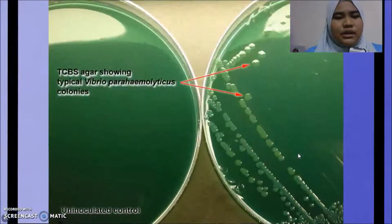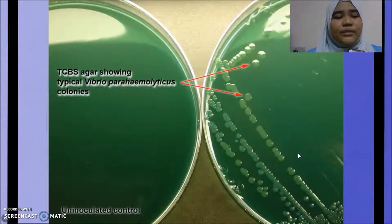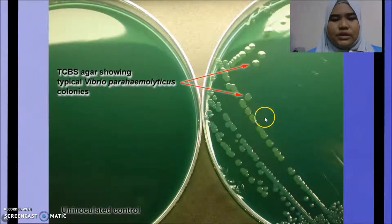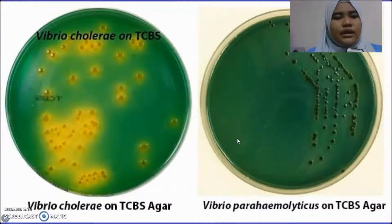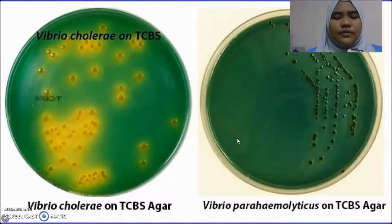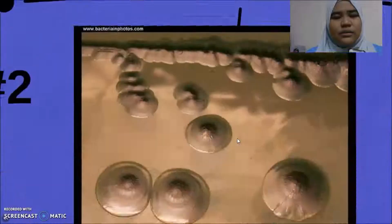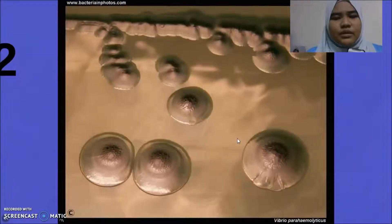These are other examples: the TCBS agar showing typical Vibrio parahaemolyticus colonies — here are the blue-green colonies. And this is the difference between Vibrio cholerae on TCBS and Vibrio parahaemolyticus on TCBS agar. Here is a closer picture.